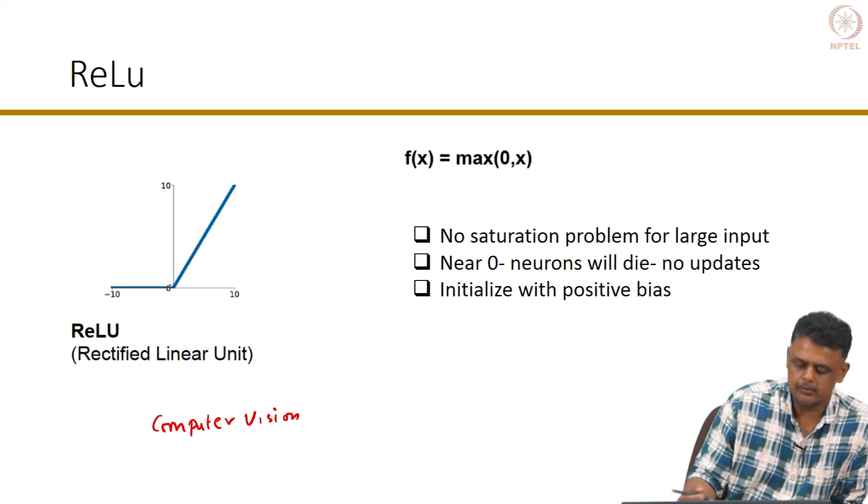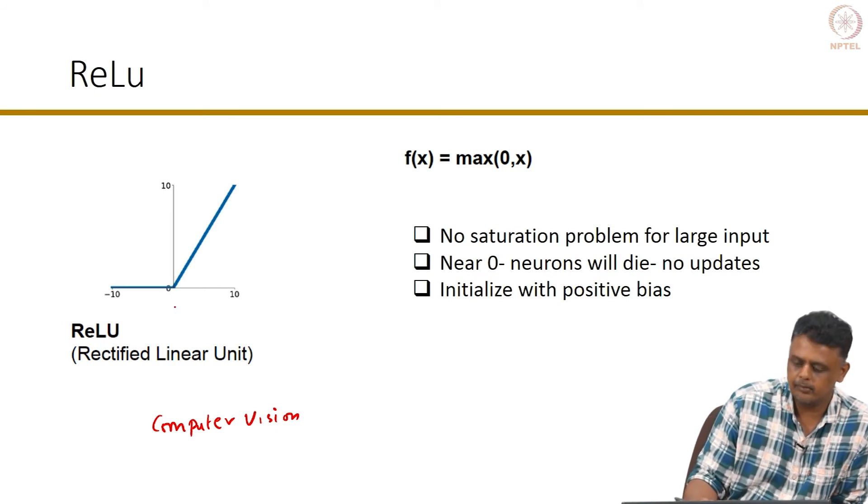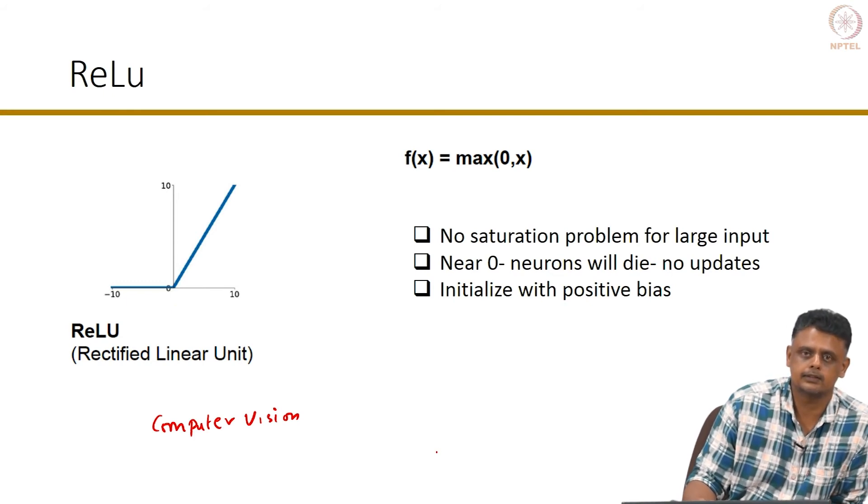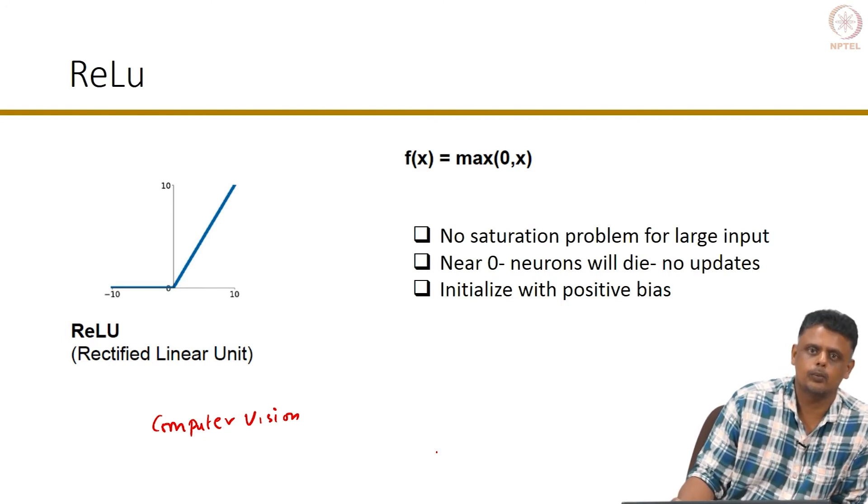Here the problem is that for very small values of the input, the function value will be very small. For negative values, the gradient will go to 0, because f of x is 0. So the gradient of f of x with respect to x, if x is negative, will also be 0, so the updates will not be done to the weights. This is the problem with ReLU.